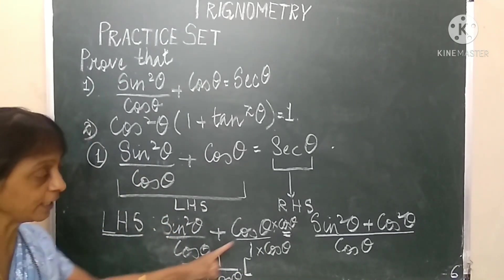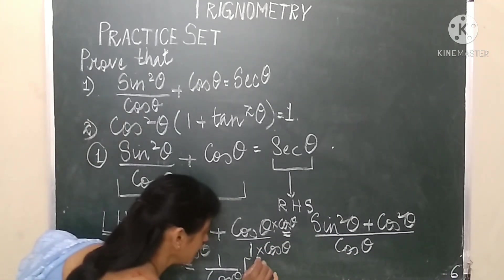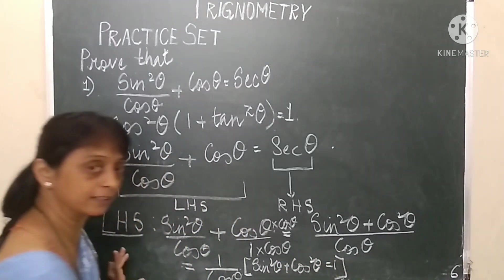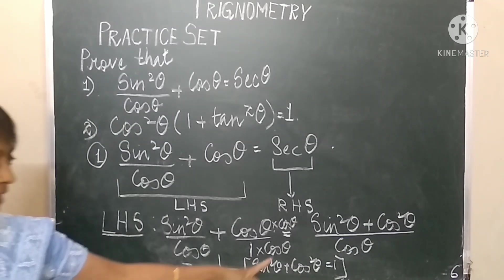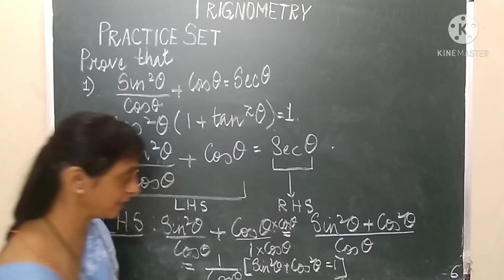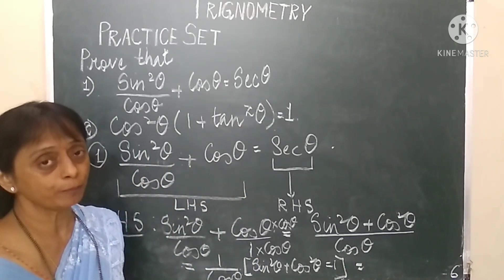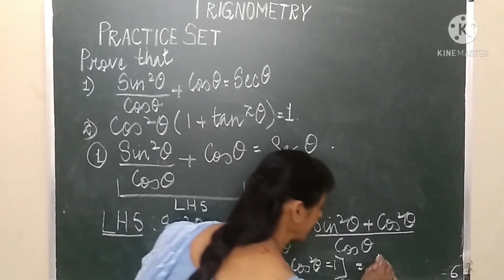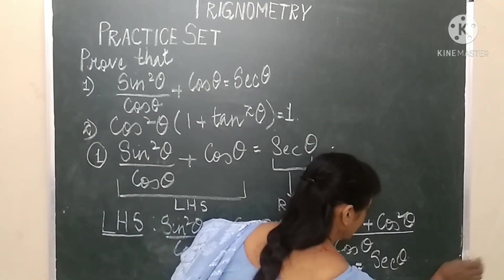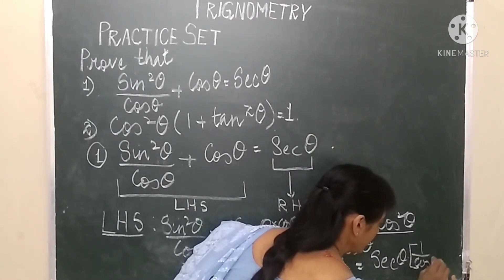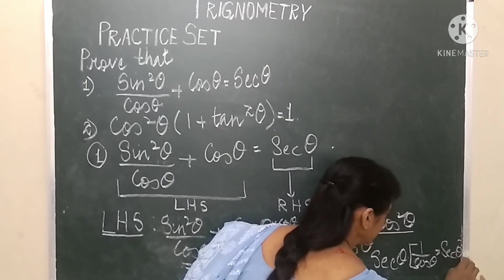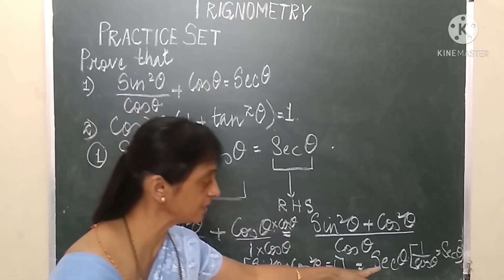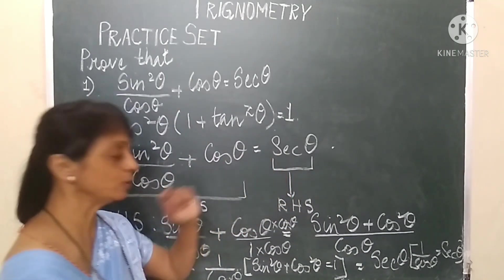We substitute sin²θ + cos²θ = 1 in the numerator, giving us 1/cosθ. The reason is that sin²θ + cos²θ = 1, which allows us to replace the numerator with 1. Now, 1/cosθ is the multiplicative inverse of cosθ, which equals secθ, because 1/cosθ = secθ. So the left hand side simplifies to secθ, which equals the right hand side.